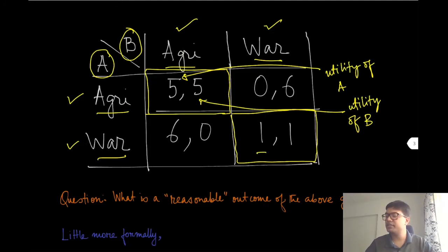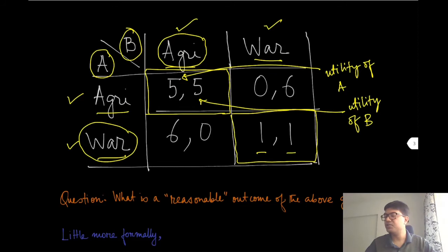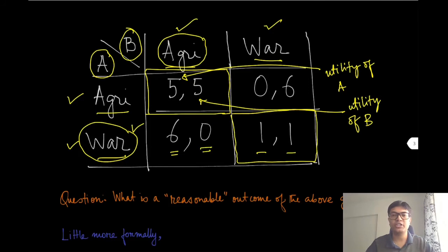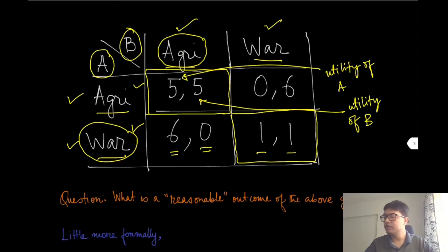Now imagine that Kingdom A invests in war and the other kingdom invests in agriculture. Kingdom A goes and attacks, getting not only the agricultural produce but also the wealth and land of Kingdom B, so A gets a higher payoff. On the other hand, Kingdom B gets zero payoff because it could not defend itself and lost its produce, land, and possibly human resources as well. The opposite situation — A choosing agriculture, B choosing war — is symmetric and yields the same kind of result.